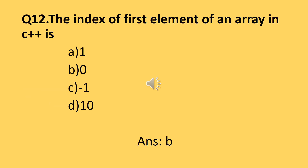Question number twelve: what is the index of the first element of an array in C++? When you create an array, its first element's index is always 0. For example, if you write 'int a[10]', you create an integer array of length 10 that can store 10 elements, with indexing from 0 to n-1 (i.e., 0 to 9). So the answer is 0.